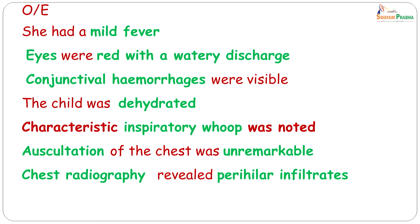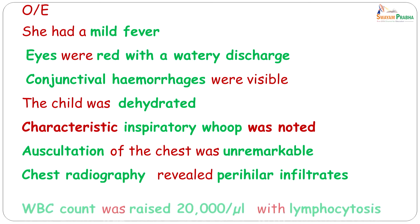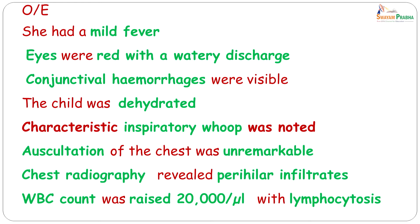On examination, she had mild fever, her eyes were red with a watery discharge, conjunctival hemorrhages were visible, she was dehydrated, and a characteristic inspiratory whoop was also noted when she coughed. Auscultation of the chest was unremarkable and the chest radiograph showed perihilar infiltrates. Her WBC count was raised and there was marked lymphocytosis.